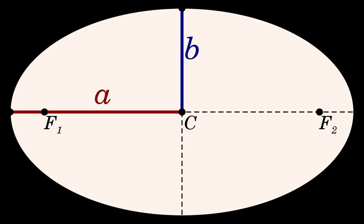The length of the semi-minor axis could also be found using the following formula: b = √((p + q)² / 4 − f²), where f is the distance between the foci, and p and q are the distances from each focus to any point in the ellipse.